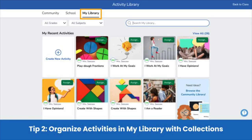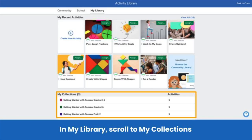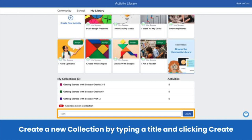Next, keep my library organized with collections. Activities you save or create in my library show in the order they're saved or created, which means it can be hard to find what you need quickly. Collections help you organize my library and save time. Remember, any activity or collection you create is always private to you. In my library, scroll to the bottom to my collections. Create a new collection by typing a title and clicking create. You might make collections by subject, unit of study, or another system of your own.